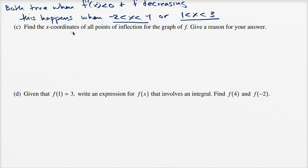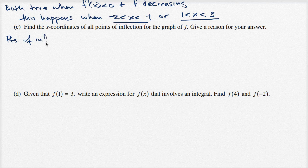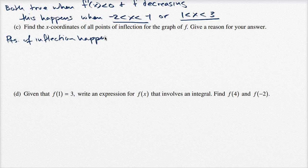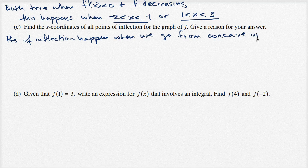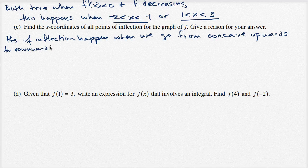So part c: find the x-coordinates of all points of inflection for the graph of f. Give a reason for your answer. Points of inflection happen when we go from concave upwards to downwards, or vice versa.